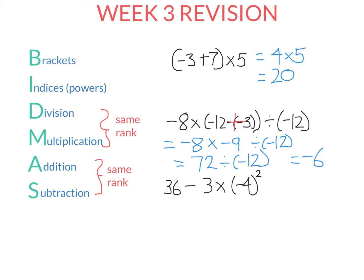Let's look at this sum. We have a subtraction, a multiplication, and a power. Because of BIDMAS, powers are the highest rank, so I leave the 36 and the 3 alone and perform negative 4 squared first. A square is always positive: negative 4 times itself gives positive 16. Now I still have two operations; multiplication is higher rank, so I leave the 36 alone and do 3 times 16, which gives 48. So it's 36 subtract 48, which gives an answer of negative 12.